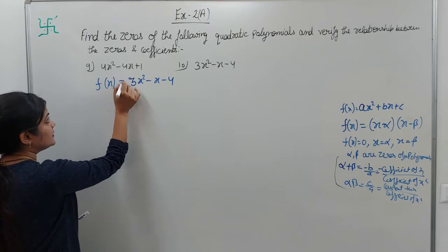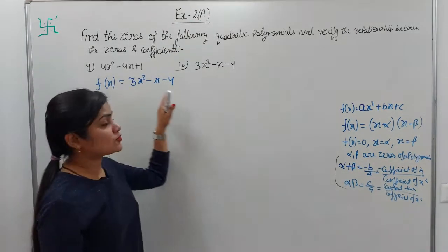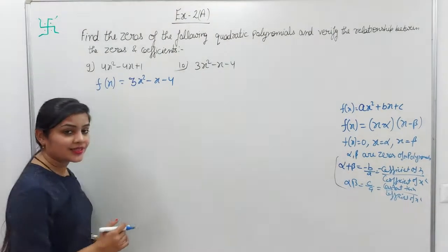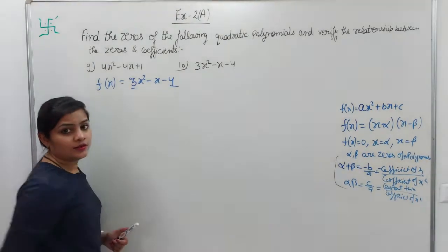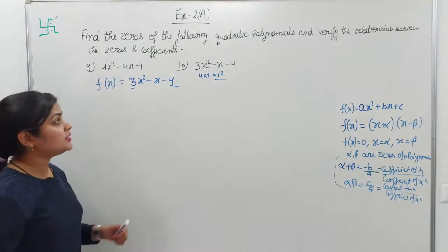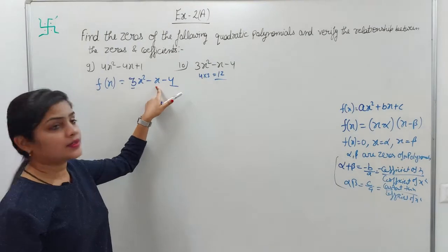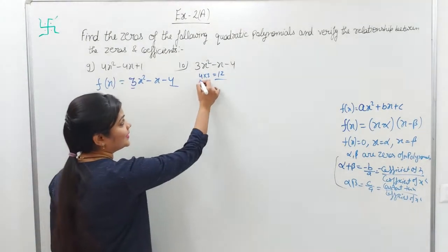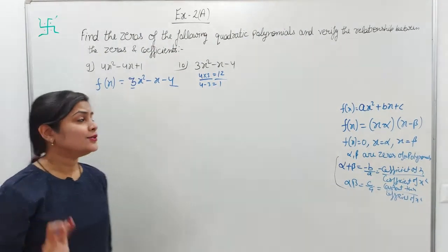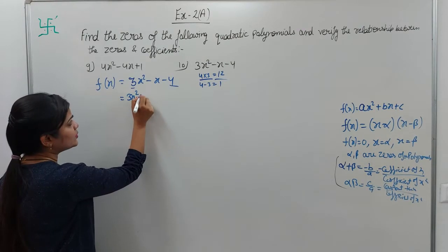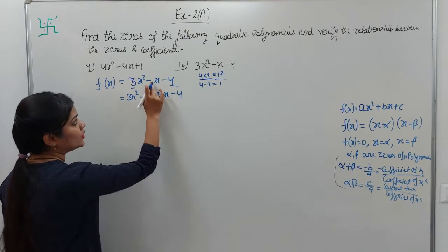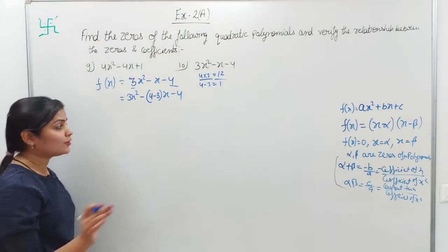This is your quadratic polynomial: f(x) = 3x² - x - 4. Now you have to calculate the zeros of the polynomial. We will factorize. The product of a and c is 3 × 4 = 12. We need to factor 12 such that the two factors multiply to 12 and subtract to give 1. Since 4 × 3 = 12 and 4 - 3 = 1, this works. So we write: 3x² - (4-3)x - 4.